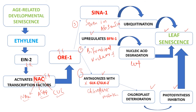There is an additional pathway where EIN2 activates EIN3. EIN3 actually represses the expression of a very important factor called miR164. When miR164 expression is repressed, ORE1 transcription factors become activated. Once ORE1 is activated, all three downstream pathways start — ultimately leading to leaf senescence. This completes the description of age-related developmental senescence.